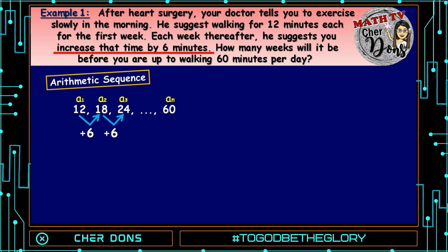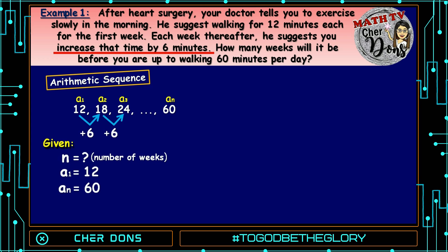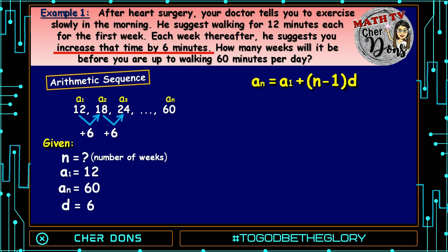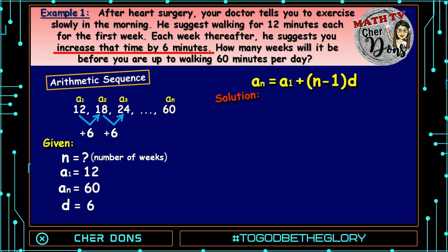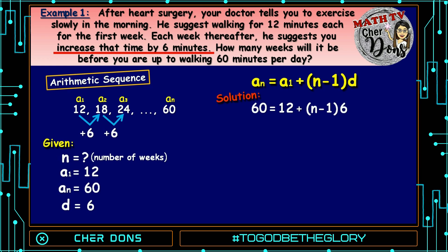After we form the sequence, let us now write all the given. We're looking for n. A sub 1 is equal to 12, A sub n is equal to 60, and d is equal to 6. Applying the formula: A sub n is equal to A sub 1 plus quantity n minus 1 multiplied by d. Now we directly plug in the given values: 60 is equal to 12 plus quantity n minus 1 multiplied by 6.